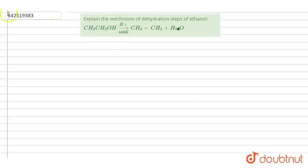Hello everyone. Let's start the question. Explain the mechanism of dehydration steps of ethanol. Here we have ethanol. When it reacts at 443 Kelvins, it forms ethene CH2 double bond CH2 and gives H2O. When alcohols are heated with concentrated H2SO4 at 443 Kelvins, they get dehydrated to form alkene.